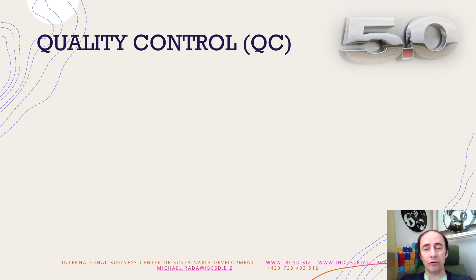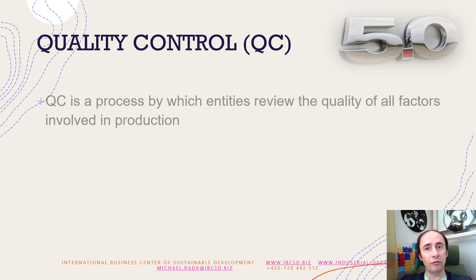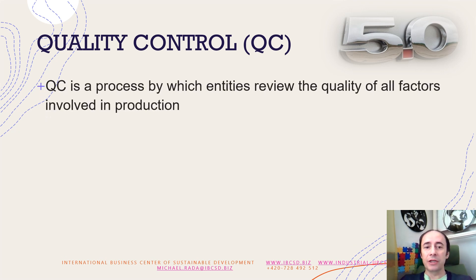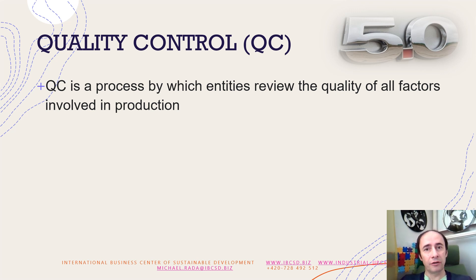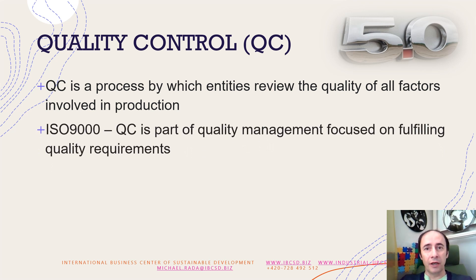What is quality control? If we look at Wikipedia, we will see that quality control is the process which entitles reviewing the quality of all factors involved in production. Is it so in your own factory? We can also look from the point of ISO 9000 — it is a part of quality management focused on fulfilling quality requirements. Sounds similar, but it's not the same.